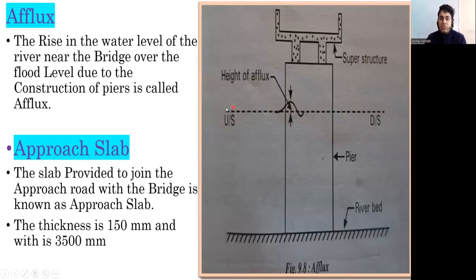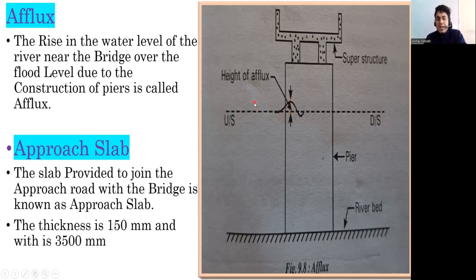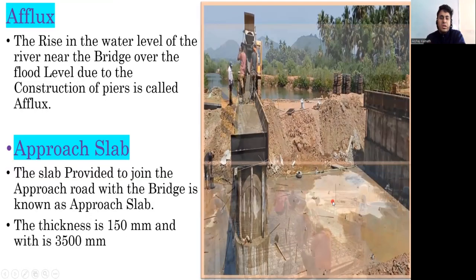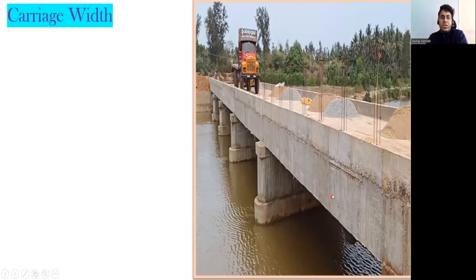Revisiting afflux through a diagram: the upstream side is where water comes from and the downstream side is where it exits. At the pier location you can see a rise in the water surface on the upstream side compared to the downstream level. That rise is called afflux.